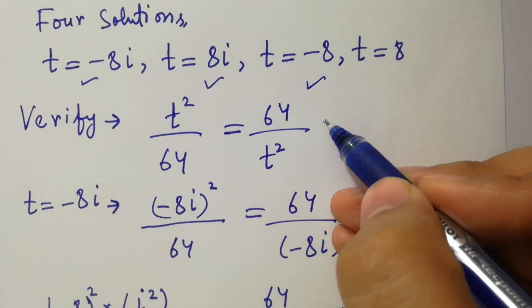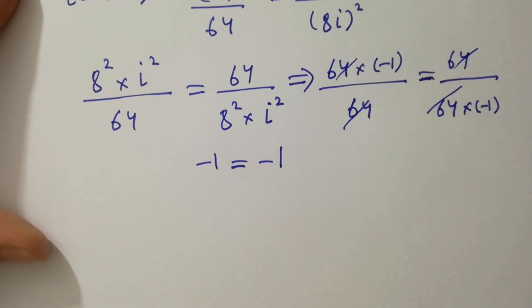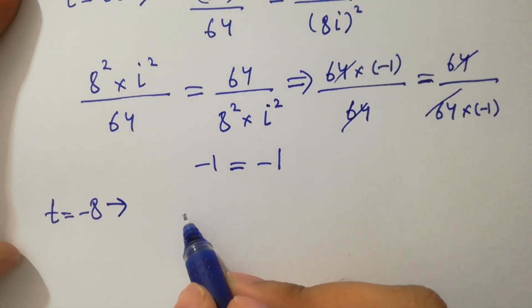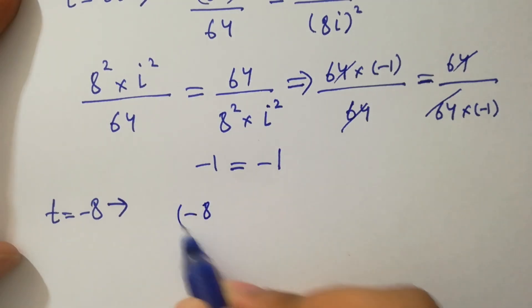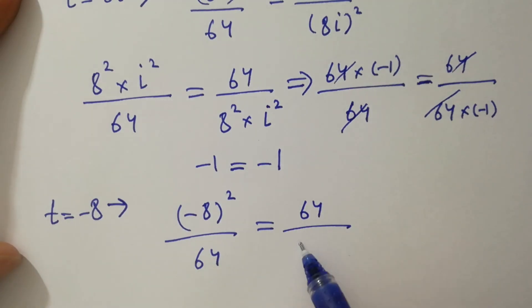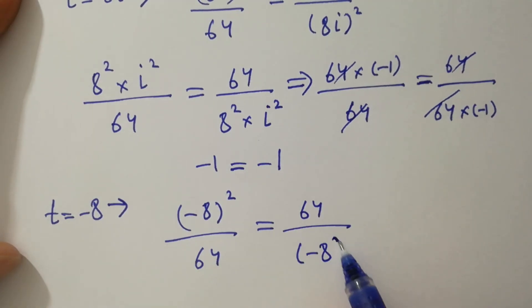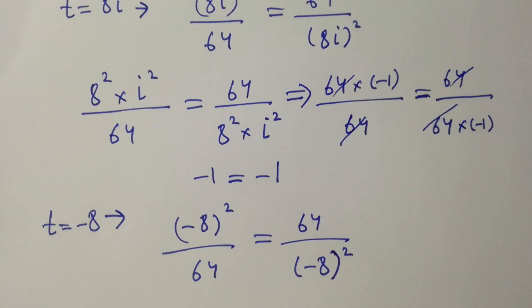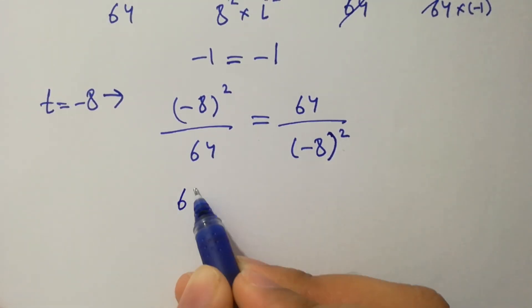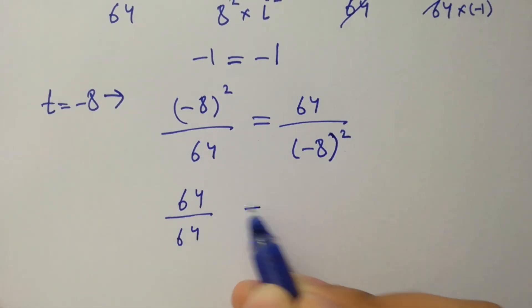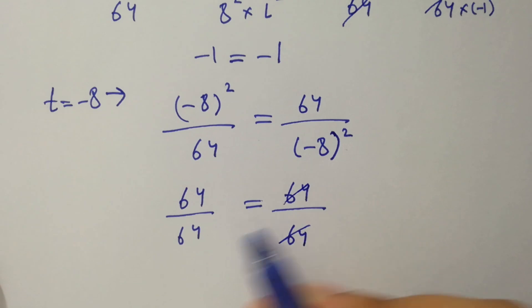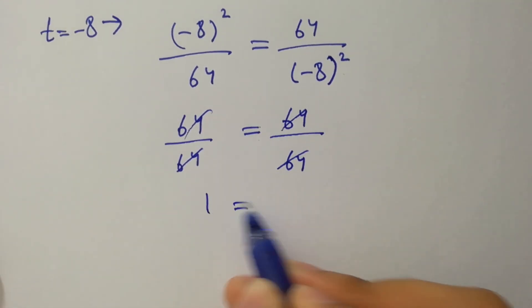For t equal to minus 8, substituting into the equation, we have minus 8 squared over 64 equal to 64 over minus 8 squared. Then 8 times 8 is 64, and minus times minus is plus, so we get 64 over 64 equal to 64 over 64. The 64s cancel and we get 1 equal to 1.